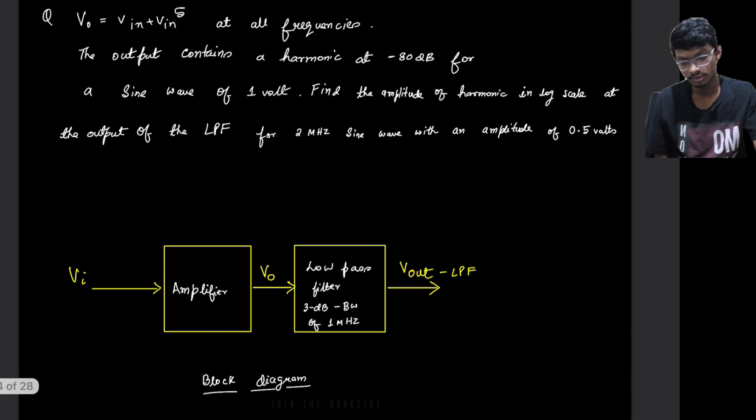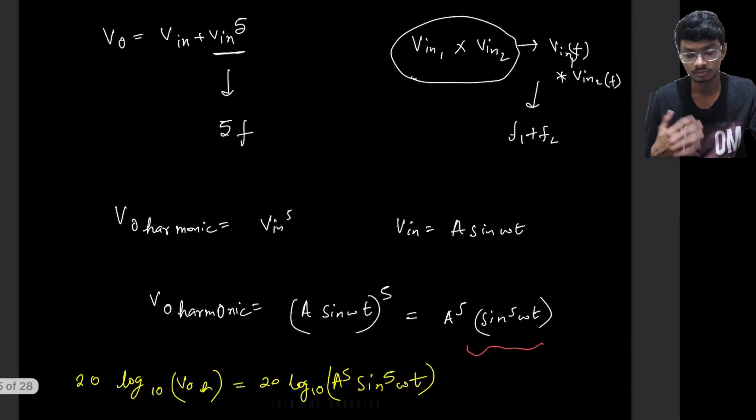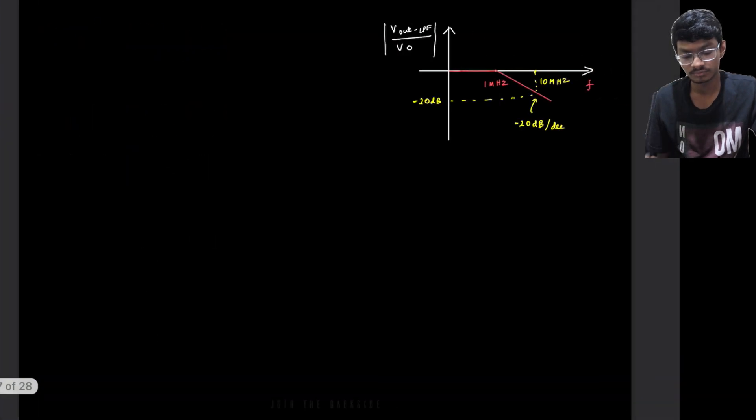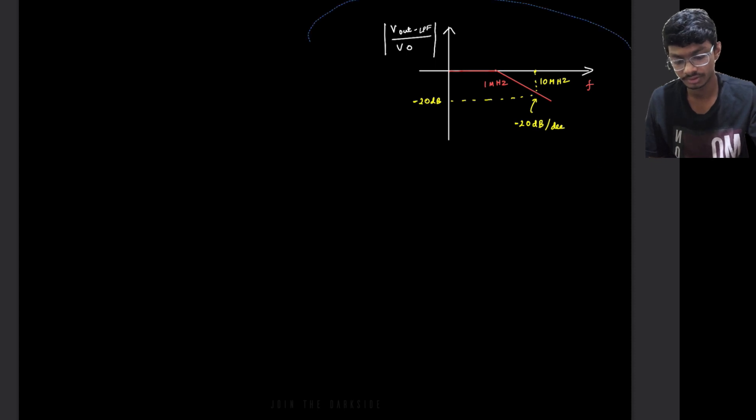Now we have to get to the filter output. What is the filter output? For getting to the filter output first we have to know the characteristics of the low pass filter. So the characteristics of the low pass filter I have already drawn here if I just zoom in a bit.